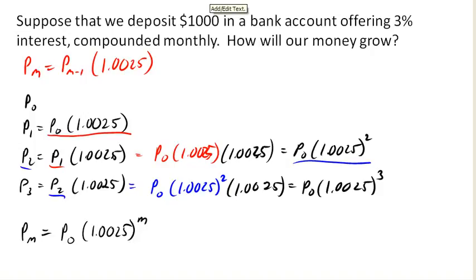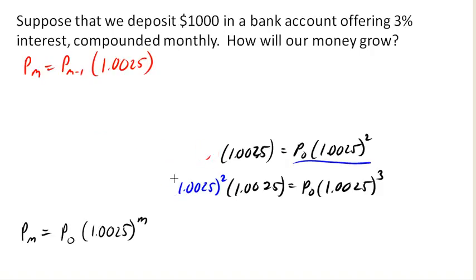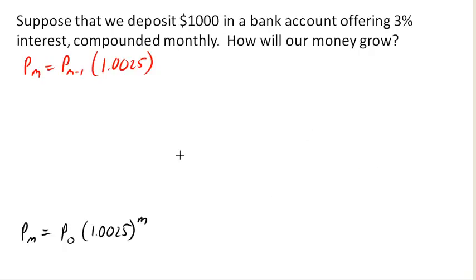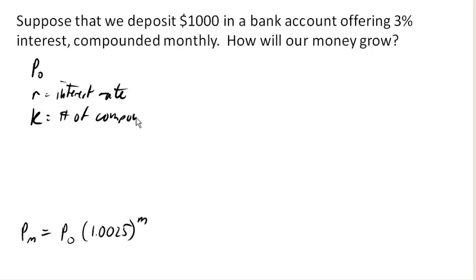Where m is the number of months that have passed. So let's see if we can generalize that now to a general form equation. We really want our equation to involve the initial amount P, r which was the interest rate, k which is going to represent the number of compounds in a year. So in this case, we were compounding monthly and so k was 12. There were 12 compounds in a month. And we want n, which is going to be the number of years. Because working with months is just a little bit more confusing in most cases.